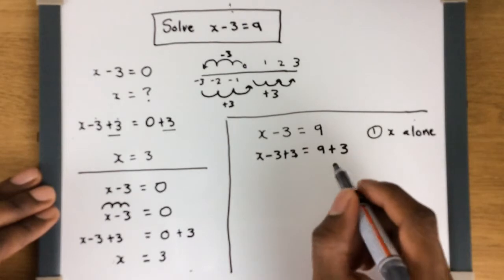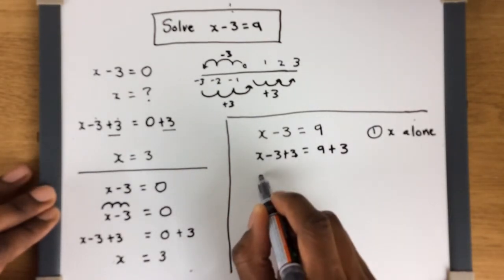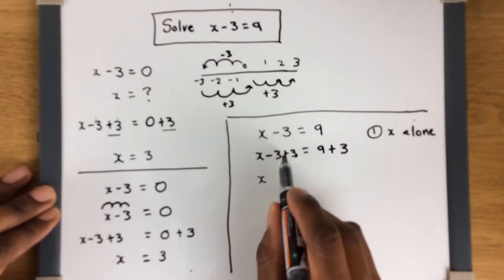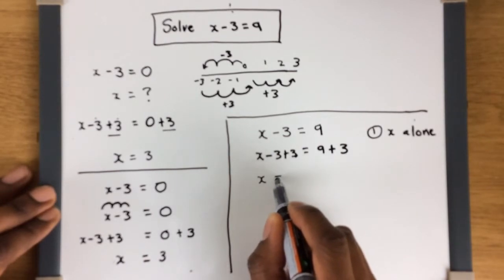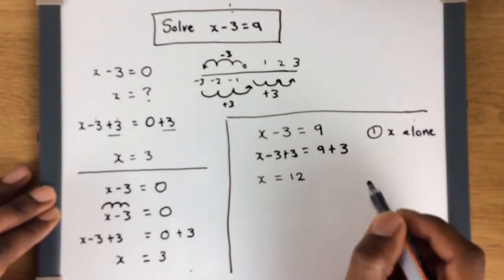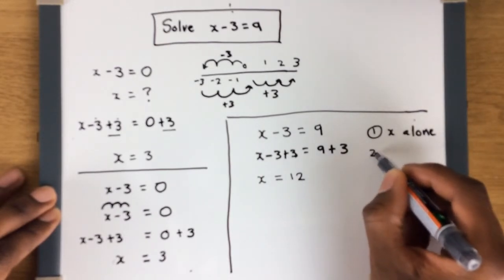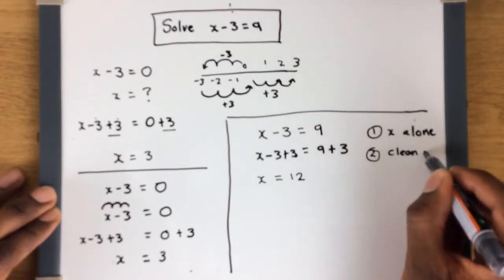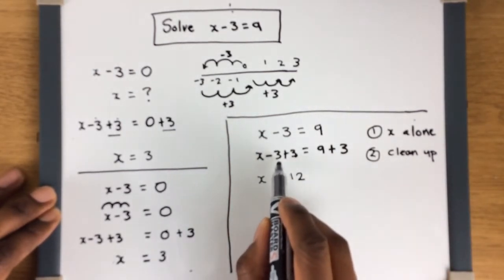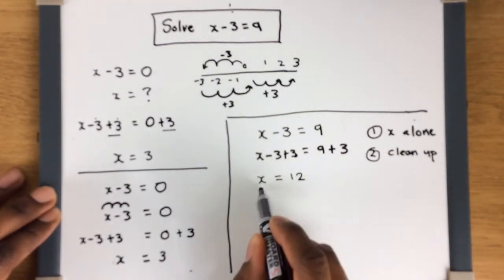The next step is just to clean up. The minus 3 and plus 3 cancel out because you're going backwards by 3 and then forwards by 3, which leaves x. On the right side, 9 plus 3 gives us 12. So x is equal to 12. Step one: get x alone. Step two: clean up by doing the basic maths.